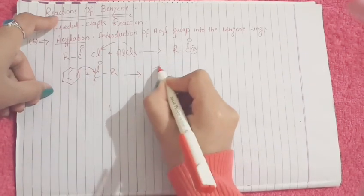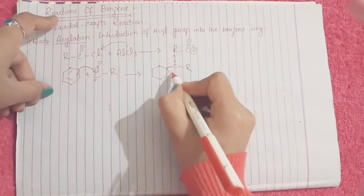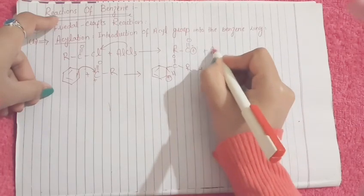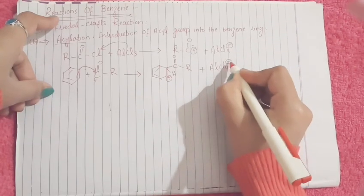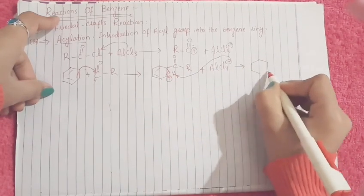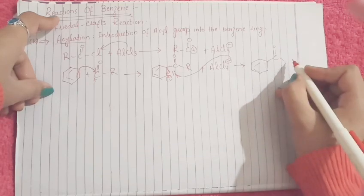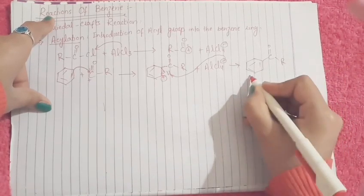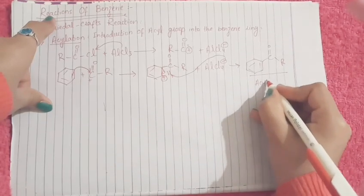This moiety will be attached over the benzene ring like this. Now we got here AlCl4 negative. That AlCl4 negative will take up this proton and the bond is shifted here. Both the alkylation and acylation are very important in the electrophilic substitution reactions of benzene. Now we got our product which is acylated benzene or a simple acyl benzene.